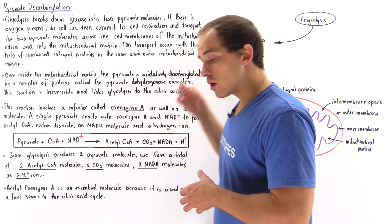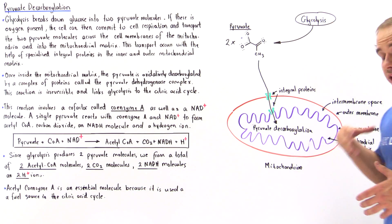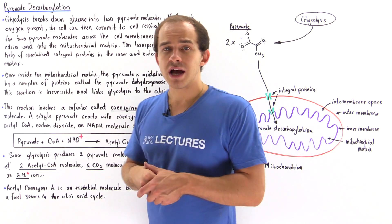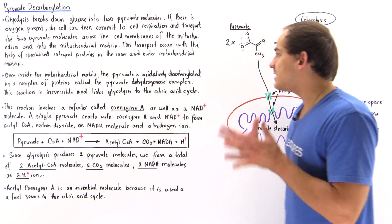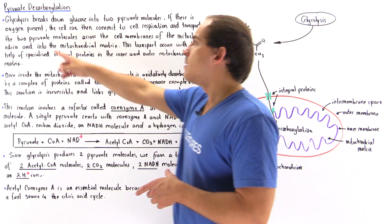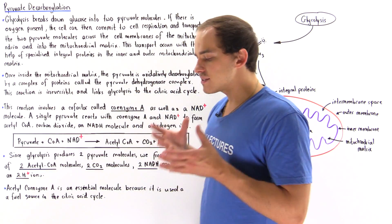Once our pyruvate molecules are inside the mitochondrial matrix, they undergo a process known as oxidative decarboxylation, and this process is known as pyruvate decarboxylation.